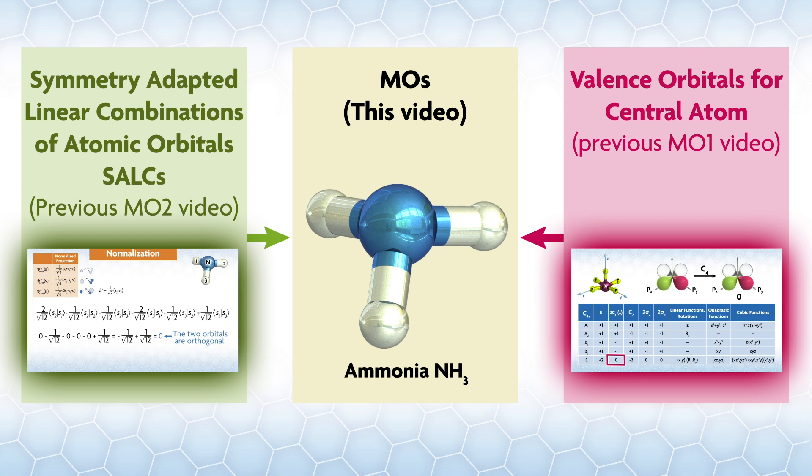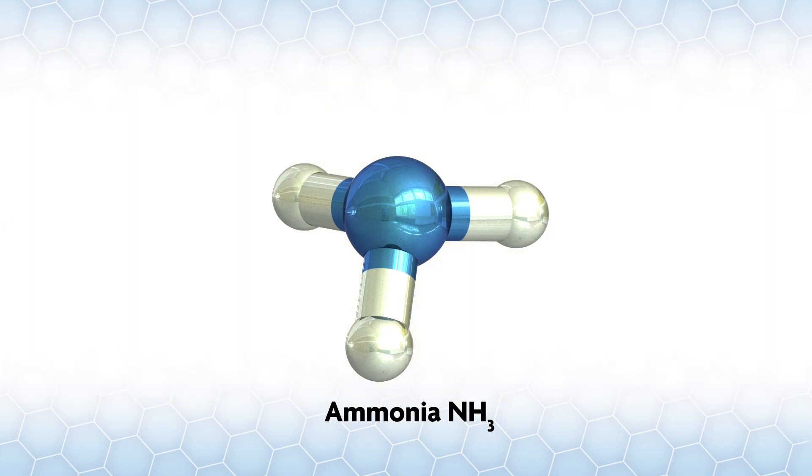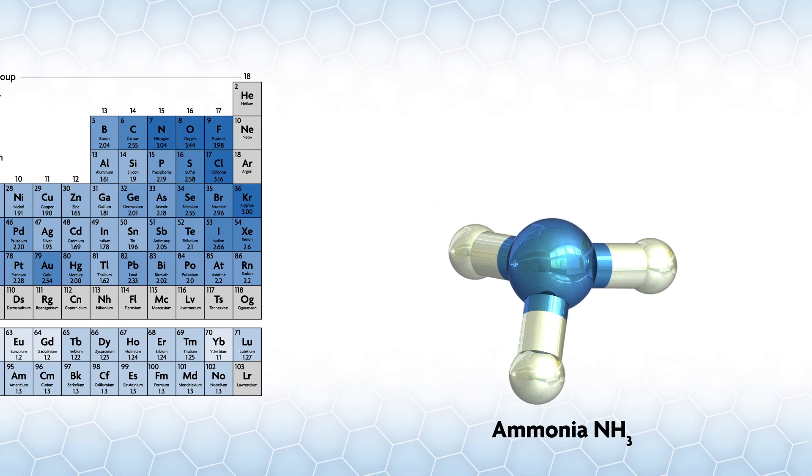Namely, we will take our orthogonalized SALCs from the previous video and put them with the orbitals of the central nitrogen to get the molecular orbitals. As a result, we'll be discussing orbital mixing to form the MOs.